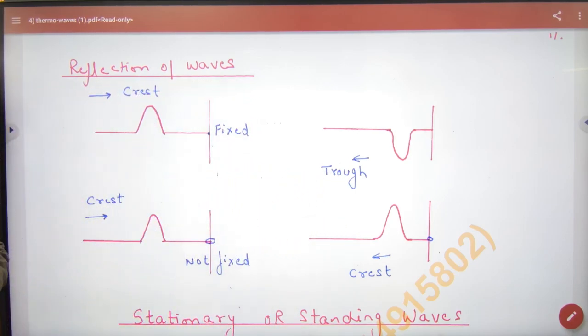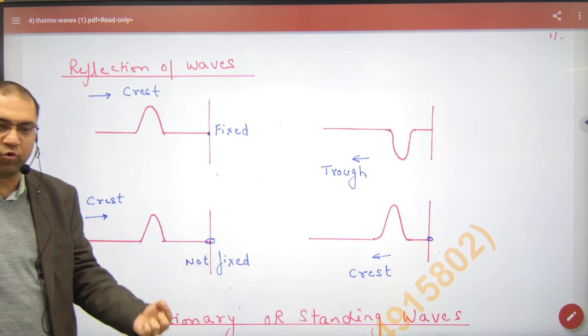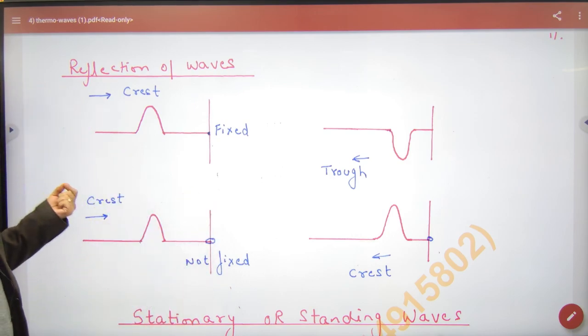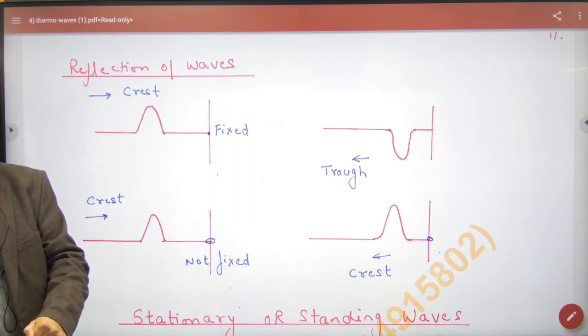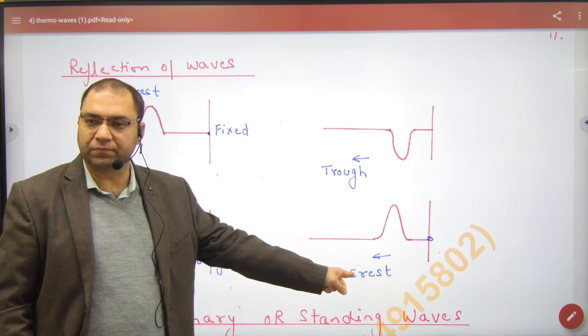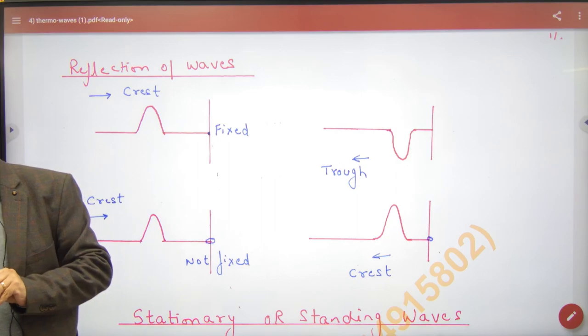But if it is movable, like a ring can move when it is not fixed, crest and after reflection what will come back? Trough? Sorry, crest. So there will not be any change. Remember.